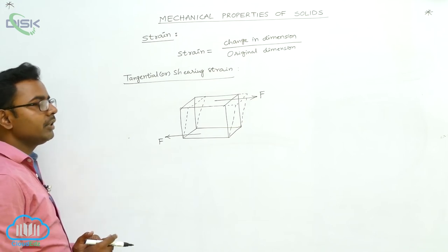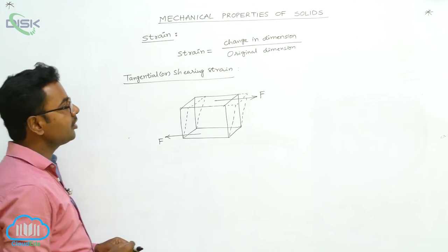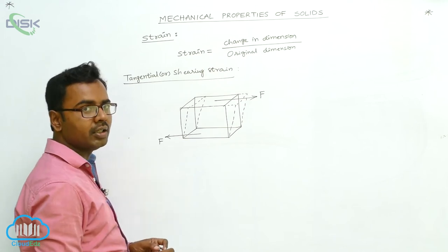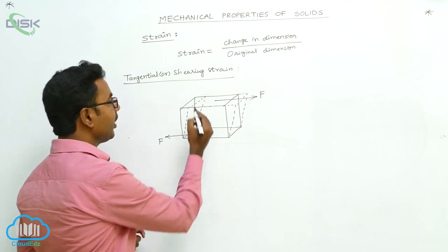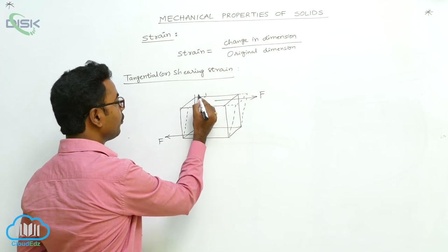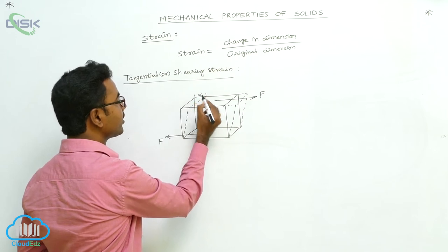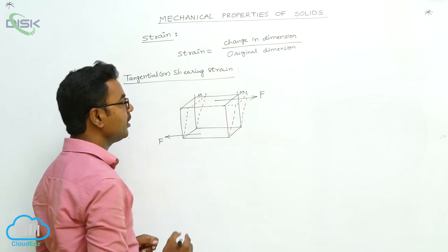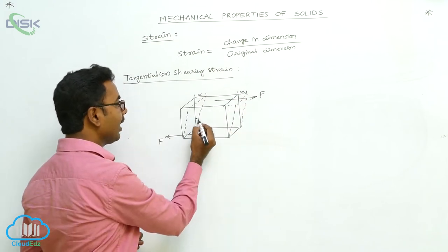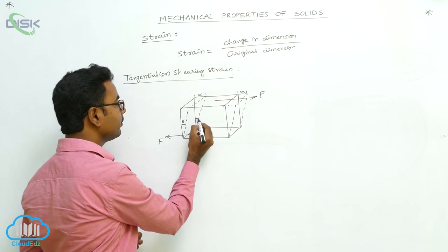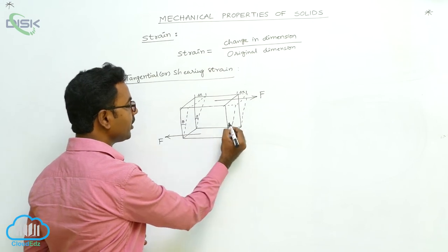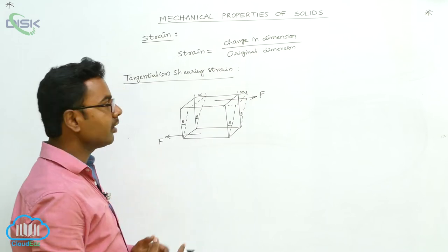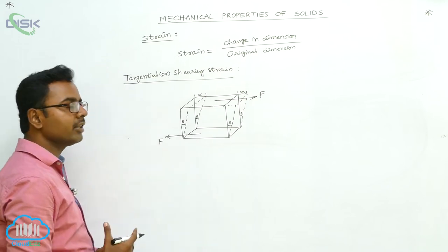This cube is experiencing tangential or shearing stress. The upper surface is displaced by a certain distance — the displacement of the top surface is Delta X. The top surface is also turned through an angle theta.